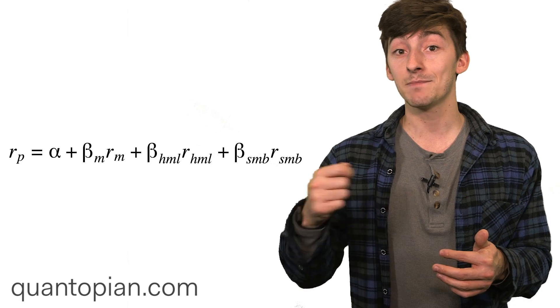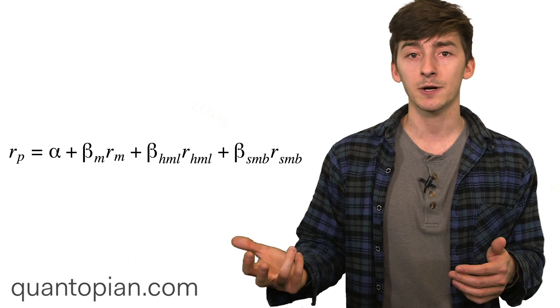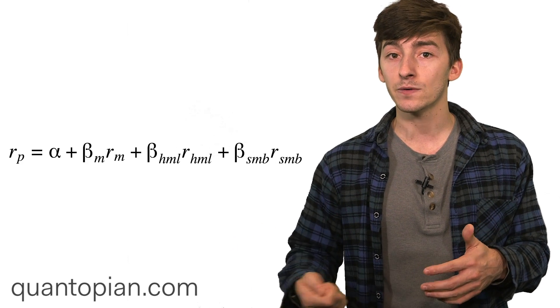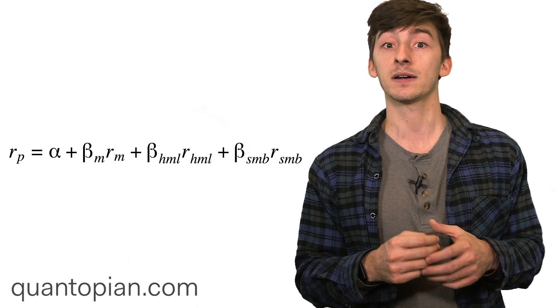returns of small minus big, and beta times the returns of the market, and then this alpha, this intercept term. Again, alpha here is what is left over after we quantify the influence of the three common risk factors that we have in here.